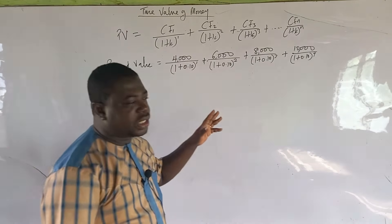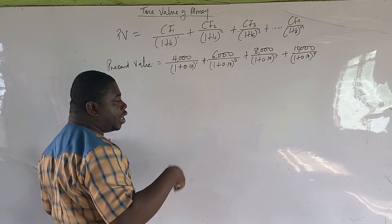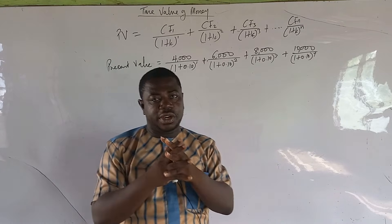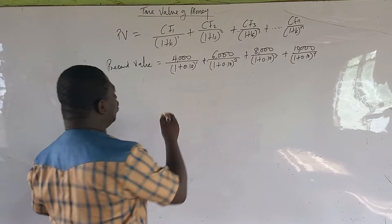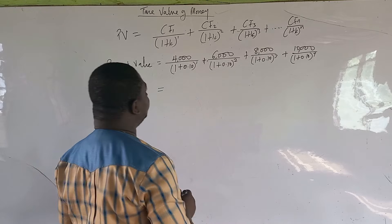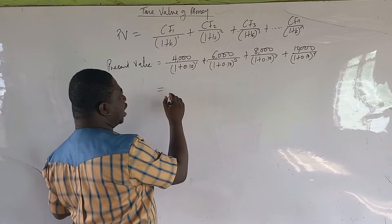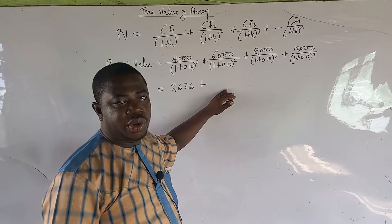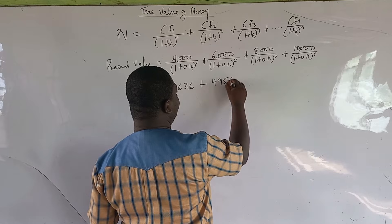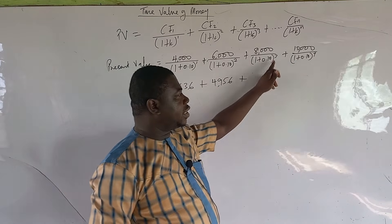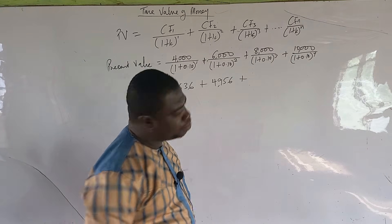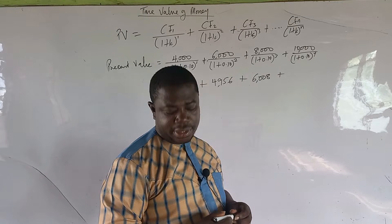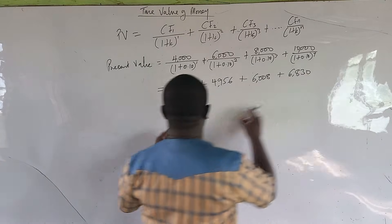We are finding the normal present value for each year separately. Because of the addition sign, we add all of them to get the total present value. Discounting year one gives us 3,636 Ghana cedis. Discounting year two gives us 4,956. Discounting the 8,000 in year three gives us 6,008 Ghana cedis. Discounting the 10,000 four years back gives us 6,830.